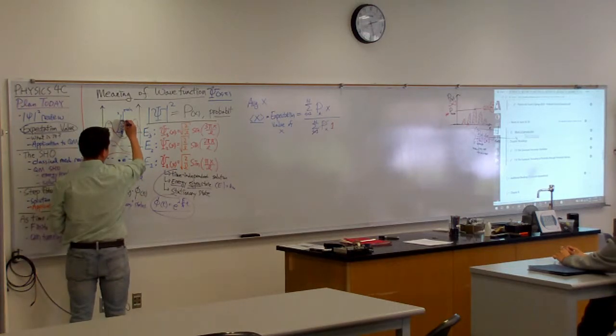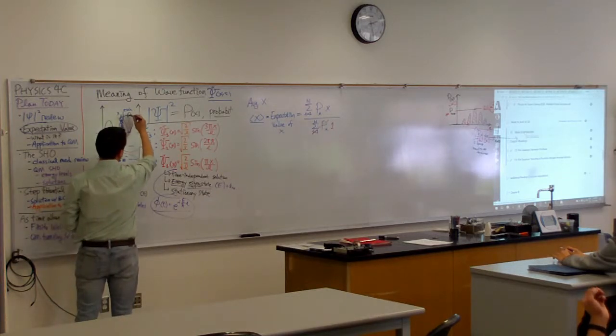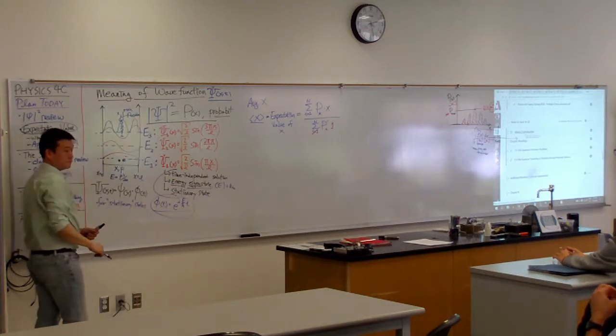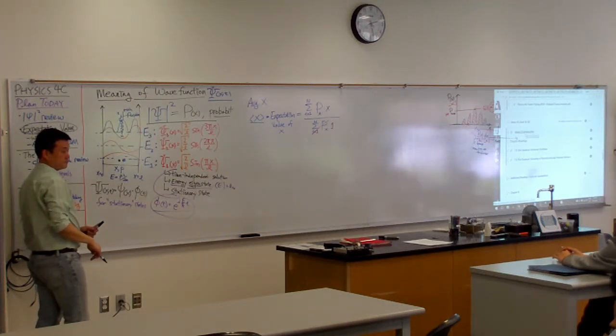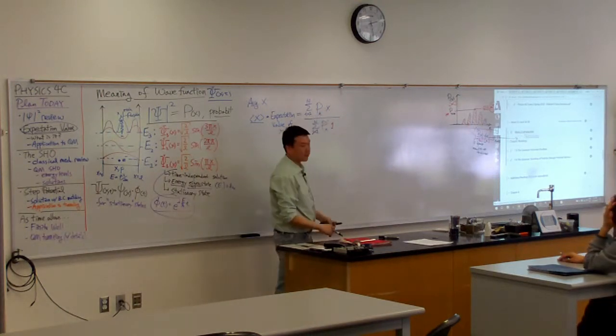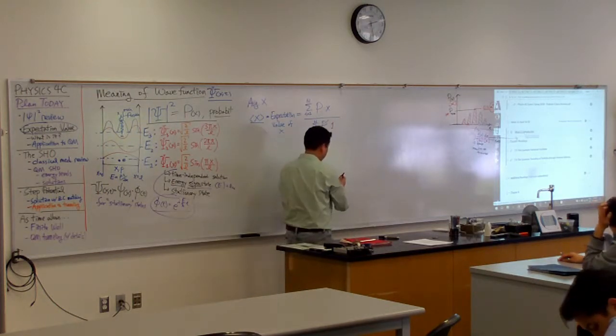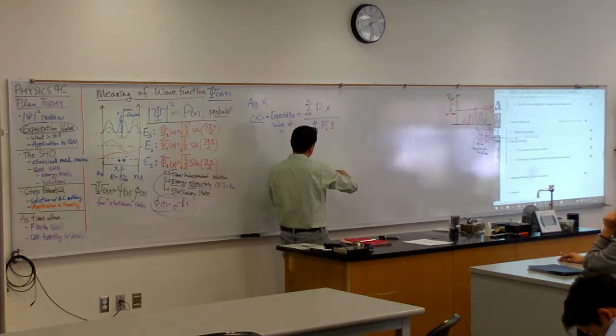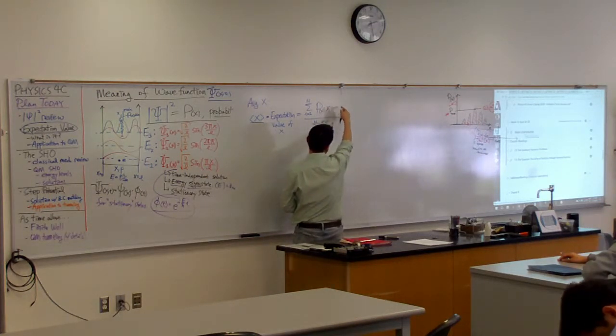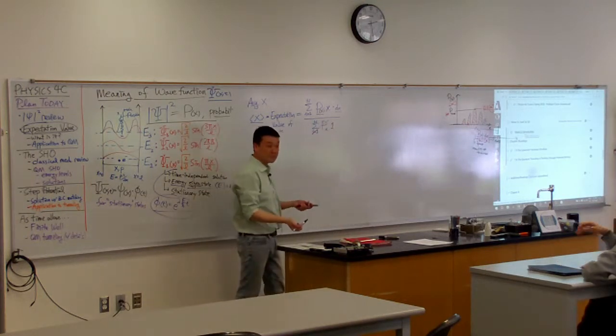And the probability of being found within this location here, that probability is probability density at position x times the interval dx. So what I wrote as P sub x is really probability density x, and then I'm just going to multiply dx here, times dx. So these two multiplied together is the P sub x.